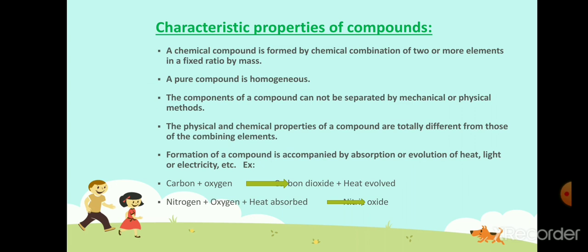The physical and chemical properties of a compound are totally different from those of the combining elements. For example, water is made up of hydrogen and oxygen. Hydrogen is combustible and oxygen supports combustion, but we use water to stop fire. This shows that the combining elements lose their identity and properties in their compounds. The formation of a compound is also accompanied by absorption or evolution of heat. For example, when oxygen and carbon combine, they form carbon dioxide and produce heat; whereas nitrogen and oxygen need heat to form nitric oxide.